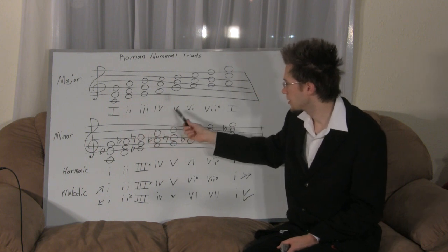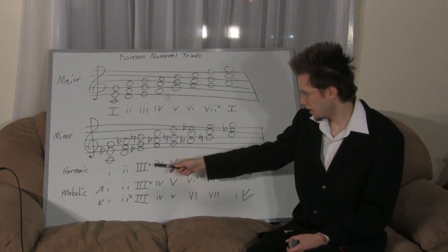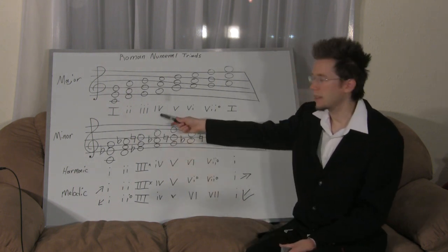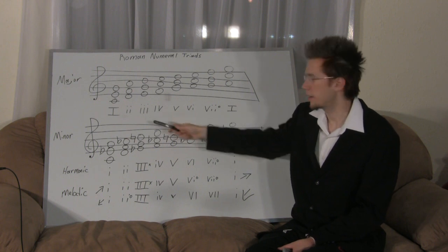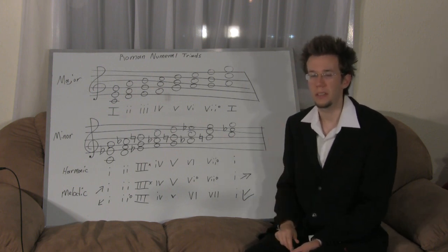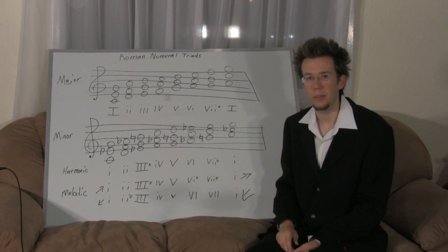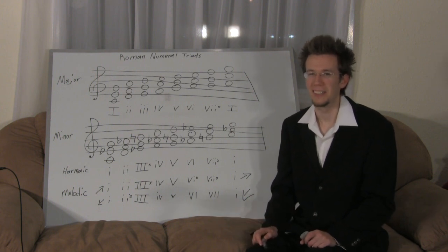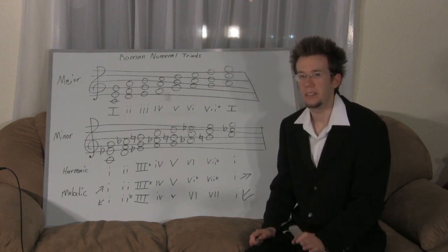It's even simpler: if a chord is augmented it has a little 'x' beside it, so uppercase with an 'x' means augmented, and uppercase with no 'x' means major. Lowercase with a circle means diminished, and lowercase with no circle means minor. These principles help you diagnose and correctly notate chords in harmonic analysis.